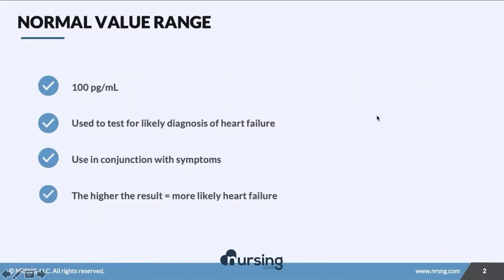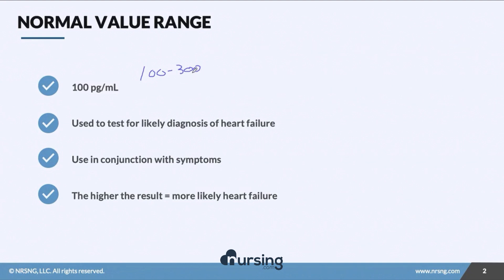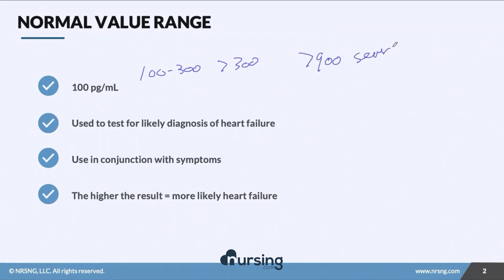The normal value for BNP is under 100 — we want it to be under 100. A value of 100 to 300 would indicate low-level heart failure. Over 300 would be moderate, and over 900 would indicate severe heart failure.